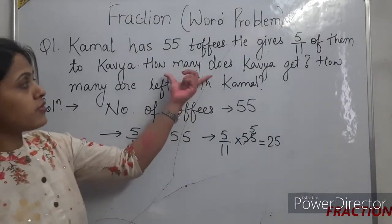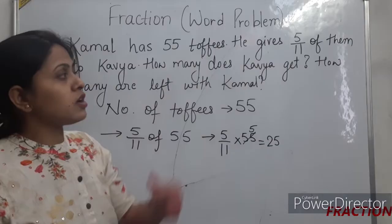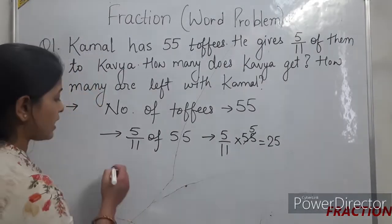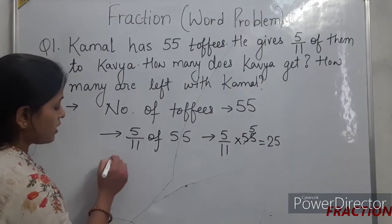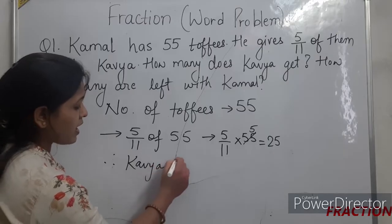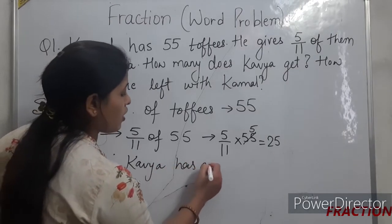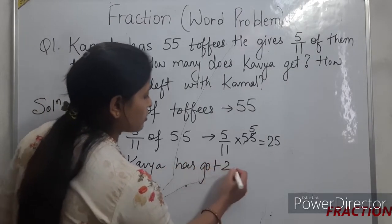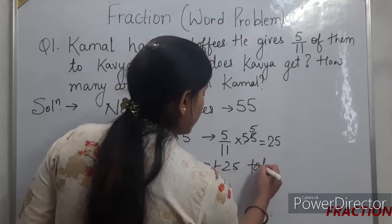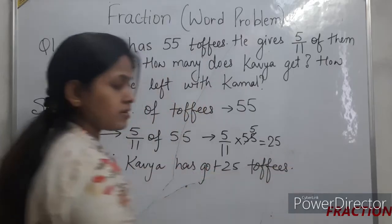The answer to our first question — how many toffees does Kavya get — is: therefore Kavya has got 25 toffees.